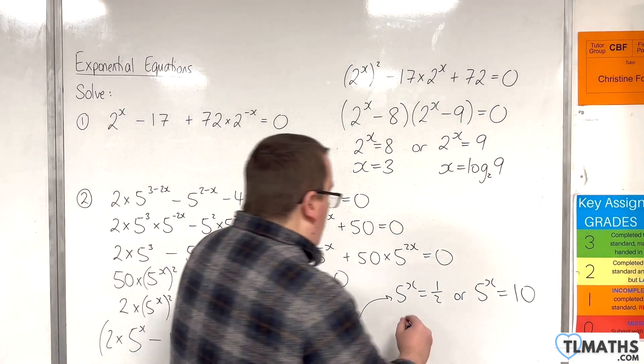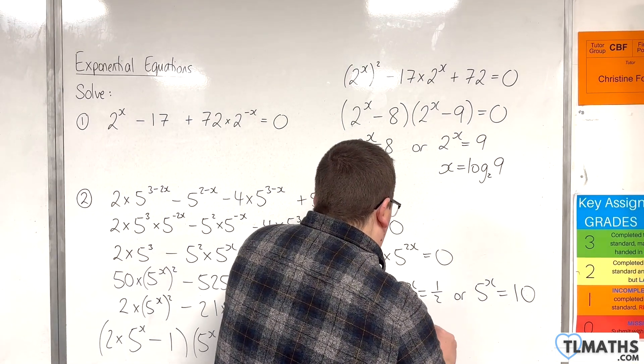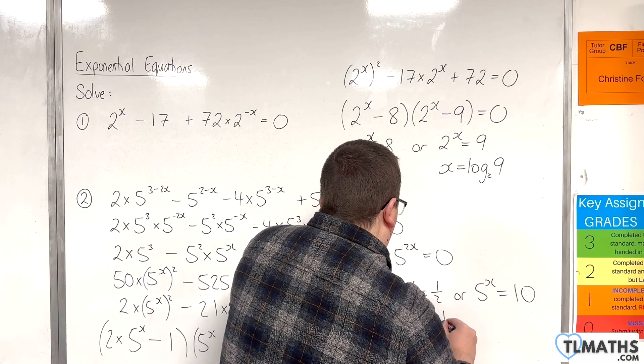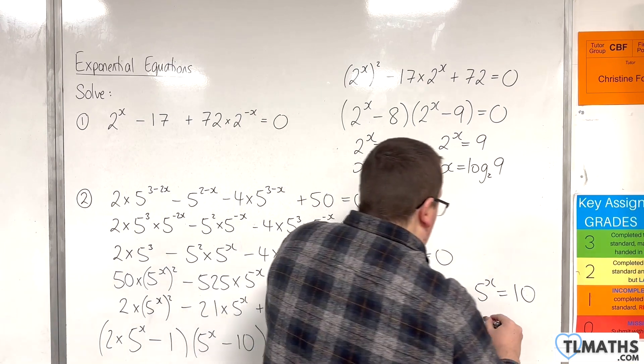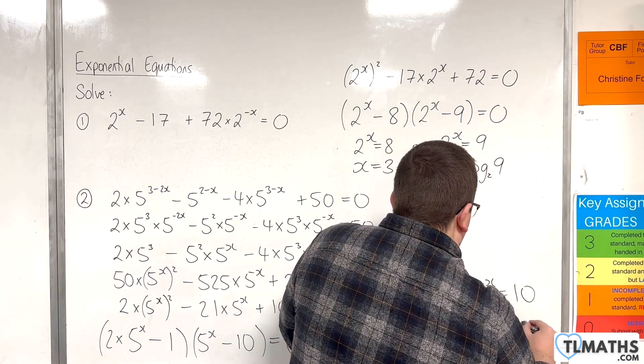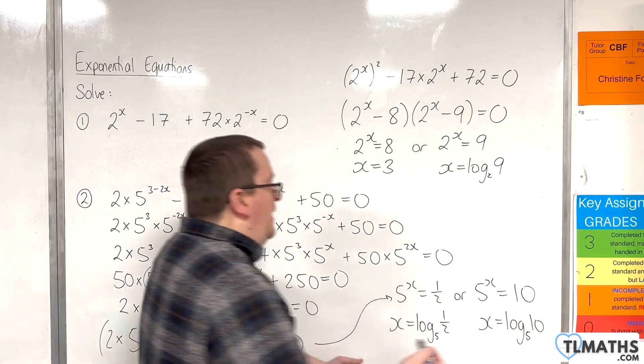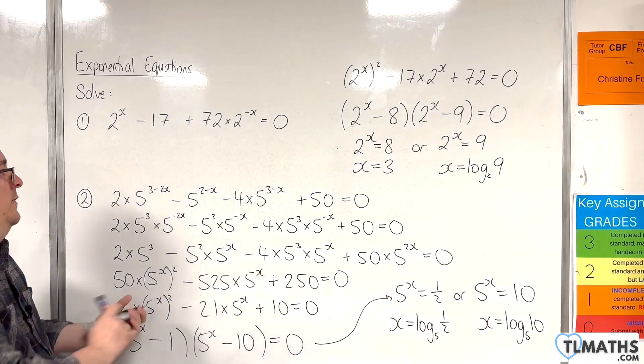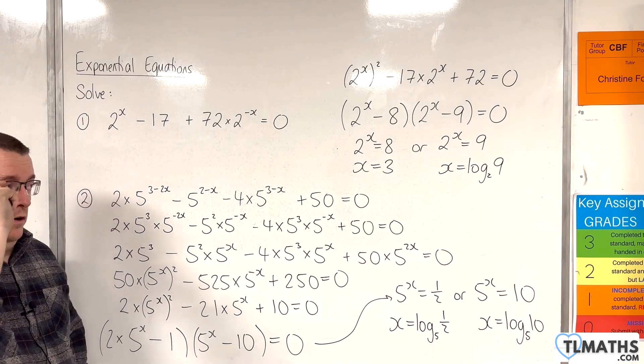So, that means that x is equal to log base 5 of 1 half. Or, x is log base 5 of 10. And these are the 2 solutions that solve the original equation.